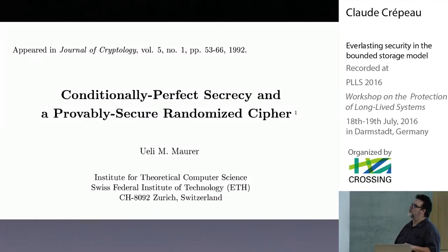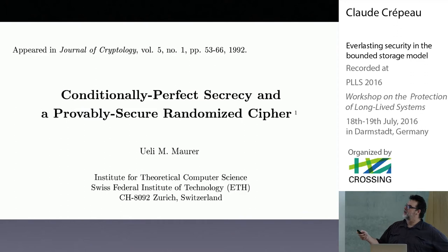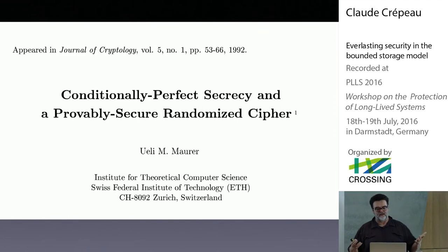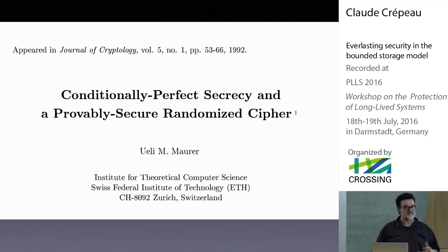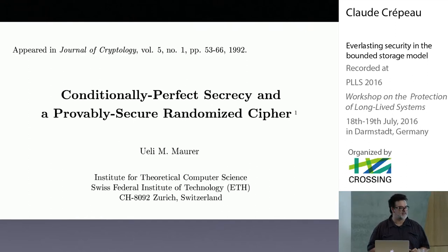The introducing paper was in 1992, where Professor Maurer introduced the concept that it would be possible to essentially break the law of Shannon — that the keys used for encryption have to be of the same size as the ciphertext. He was able to present a scenario where key expansion was actually possible.